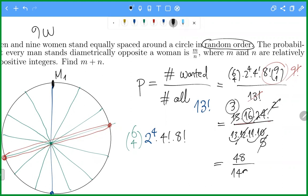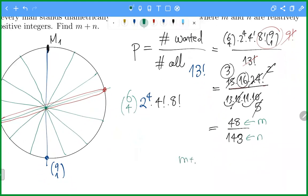So m is 48 and n is 143. So m plus n equals 48 plus 143, which is 191, our answer.